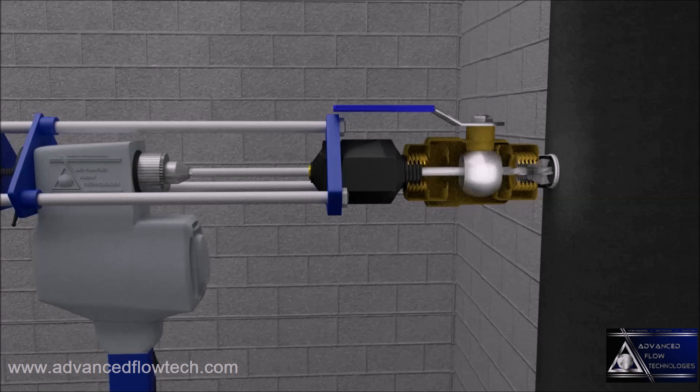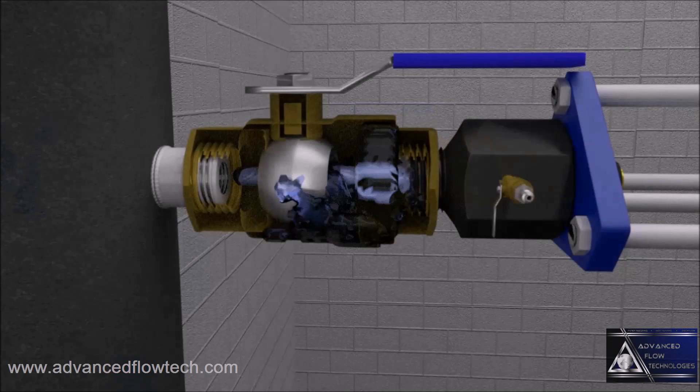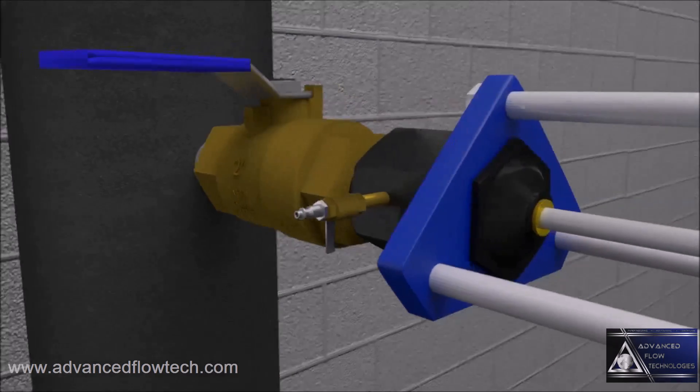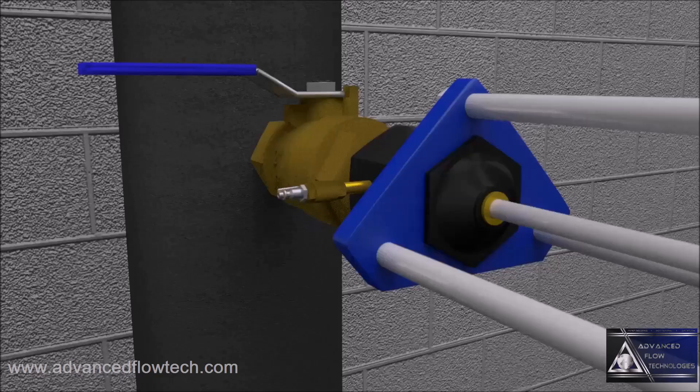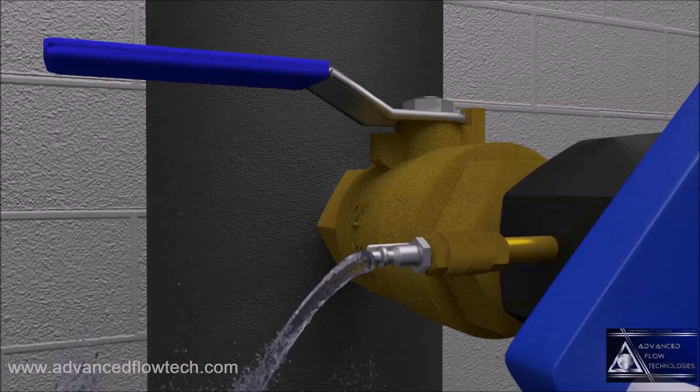During the hot tap procedure, the water pressure will be contained within the insertion valve and hot tap machine. The isolation valve will then be closed and any pressure will be released prior to removing the hot tap machine.